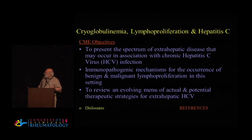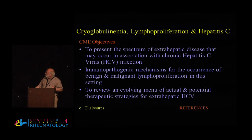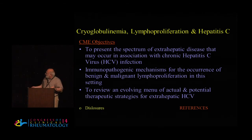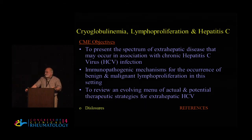There's a lot one can say about each of these three subjects, but I'm going to focus on the combination. What we're going to be talking about is extrahepatic disease, which can occur in association with Hepatitis C. There's a fair amount of information about immunopathogenic mechanisms for this, and also the occurrence of malignant lymphoproliferation in this setting. There's actually some interesting new material coming out in terms of treating this and looking at the overlap between these three entities — a specific viral infection, its associated diseases, lymphoproliferation as a consequence, and therapeutic strategies, because our treatments for Hepatitis C are undergoing a lot of improvement.